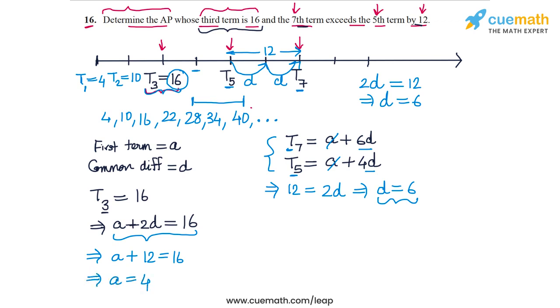So using this algebraic approach also, we arrive at the same conclusions that the first term is 4 and the common difference is 6. Once we have these two parameters, the progression is determined because we can then define the sequence precisely, and if we want we can write the first few terms of the progression.